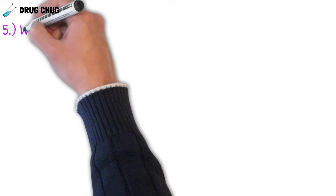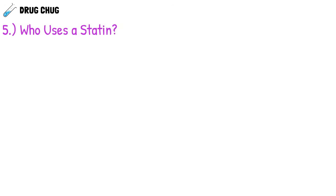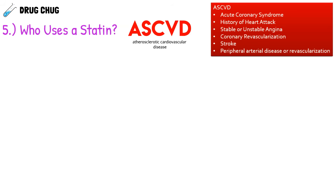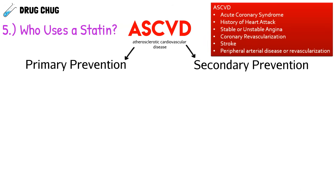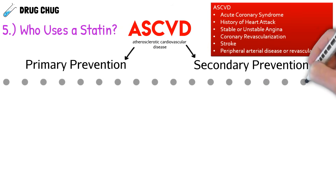Now let's see who actually uses a statin. Essentially, it's a person who has or is trying to prevent ASCVD — atherosclerotic cardiovascular disease — which includes stroke and heart attack. A patient can be assigned a statin for primary prevention, meaning they don't have ASCVD but are at high risk, or for secondary prevention, meaning they've had ASCVD and we want to prevent a second occurrence.